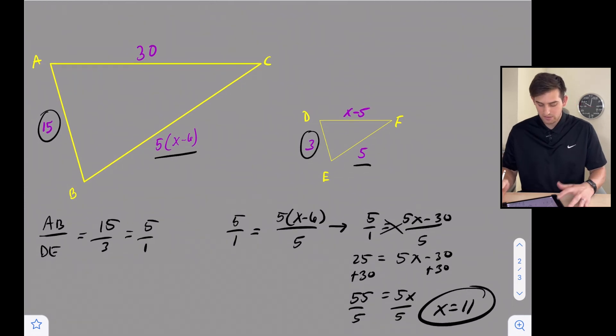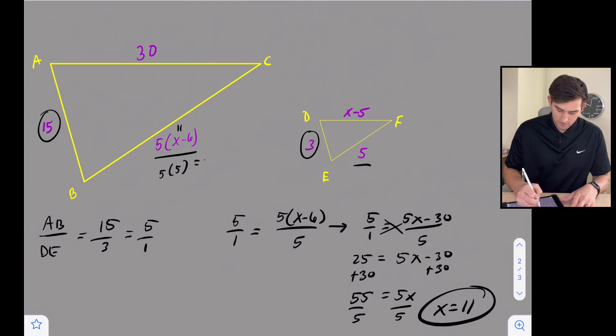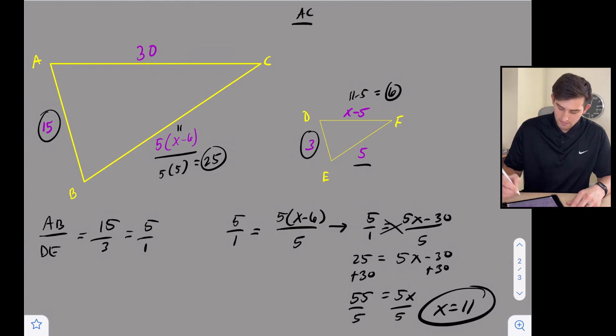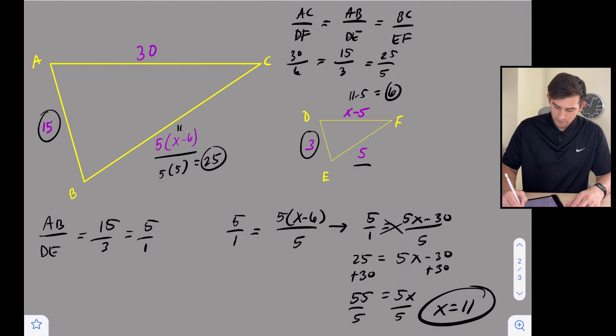So now we can plug that back in just to make sure X is 11. So if X is 11 here, this would be 5 times 5, which is 25. This would be 11 minus 5, which is 6. So now when we compare all three of our corresponding sides, they should have that same ratio of 5 over 1. So let's do AC over DF, then we're going to do AB over DE, and lastly BC over EF. So AC over DF would be 30 over 6. AB is 15, DE is 3.